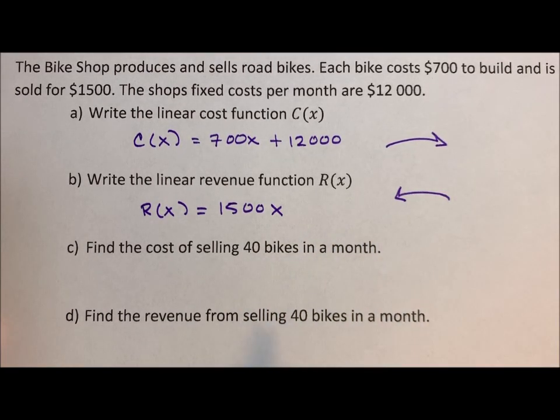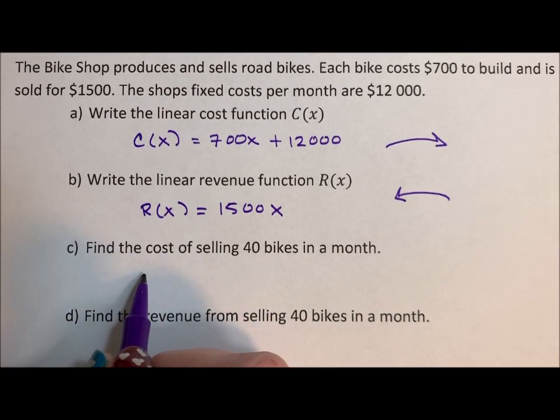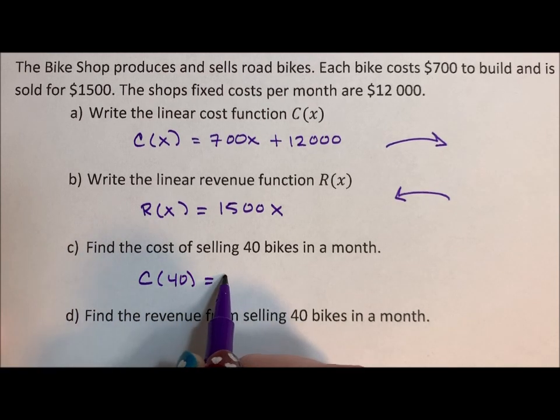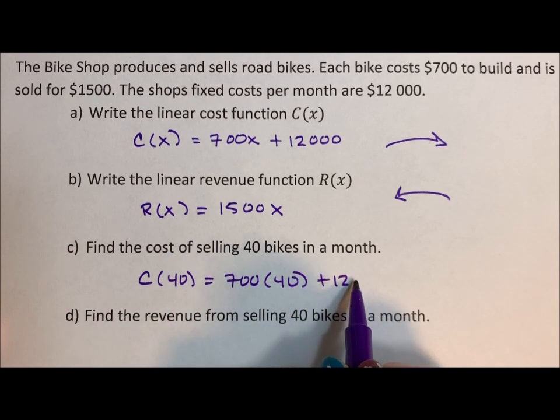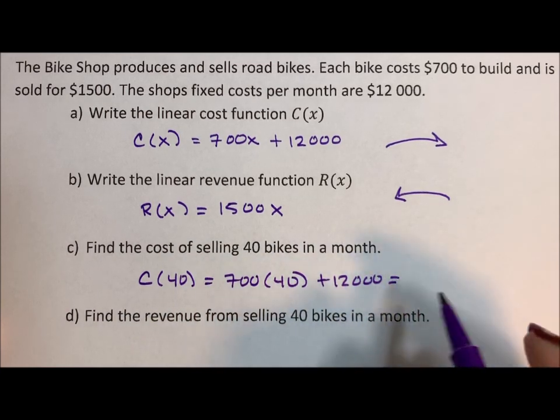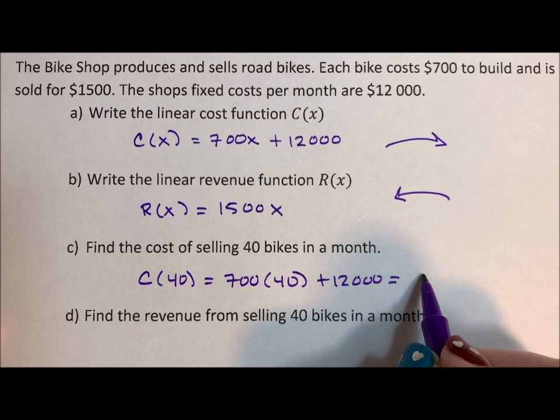Find the cost of selling, building and selling 40 bikes a month. So C(40) is $700 times 40 plus $12,000. So the cost of 40 bikes is $40,000.